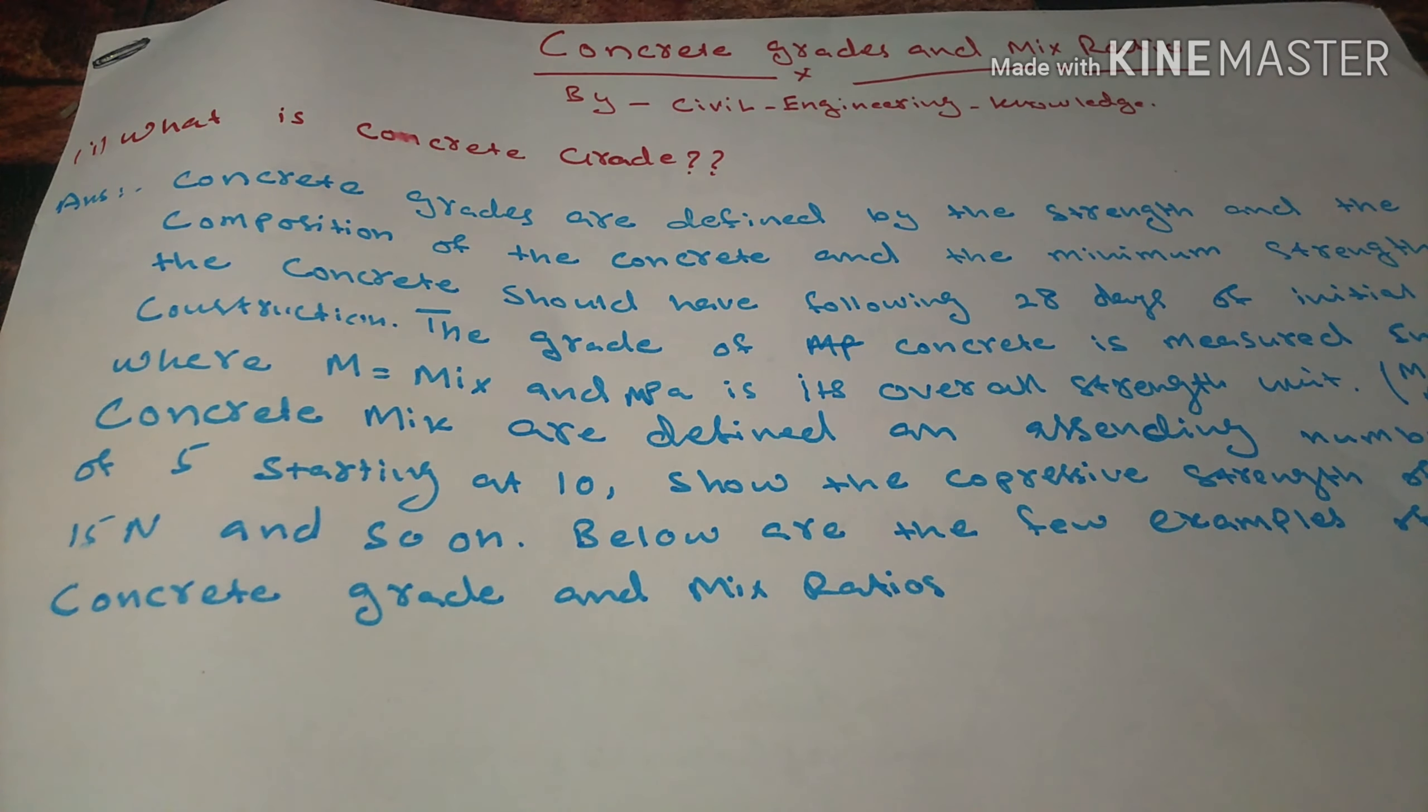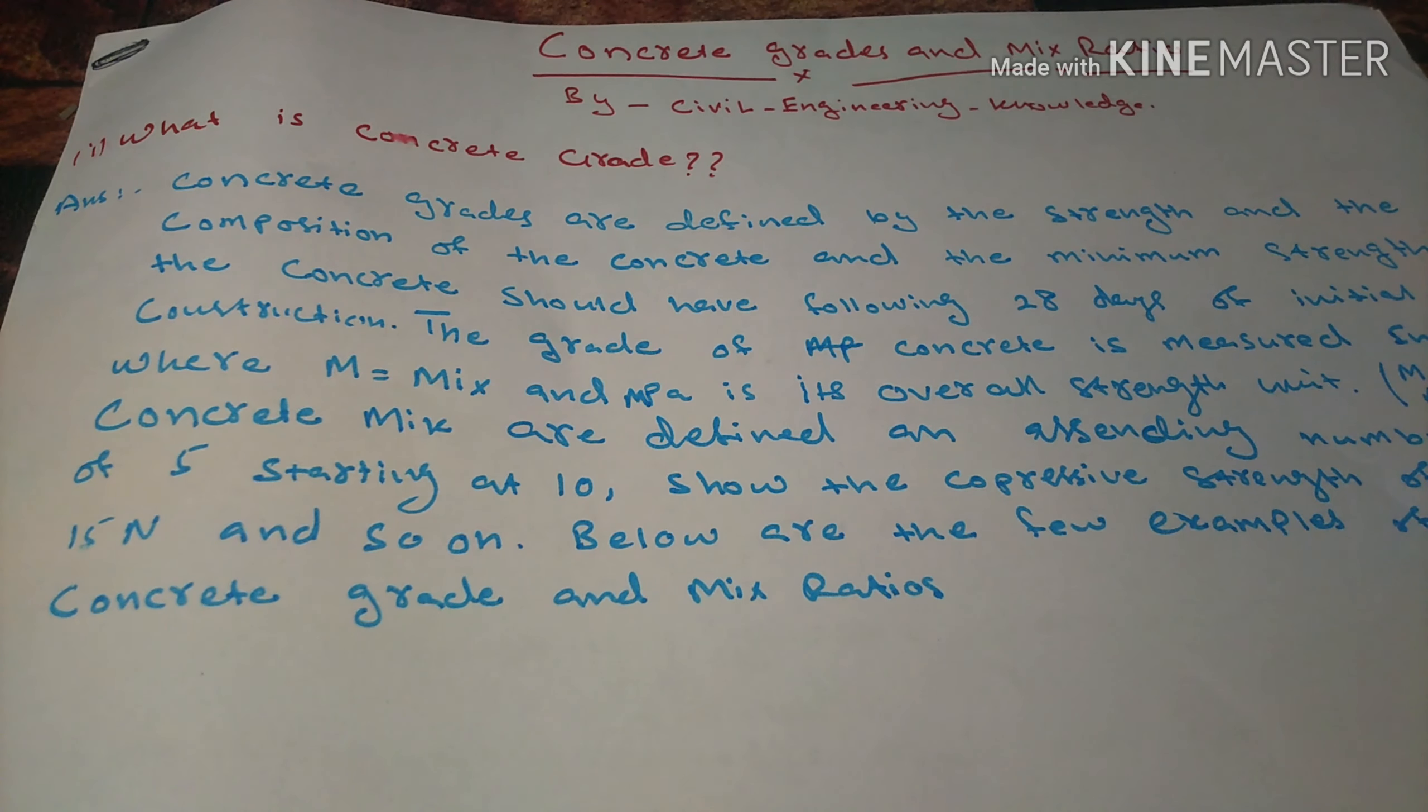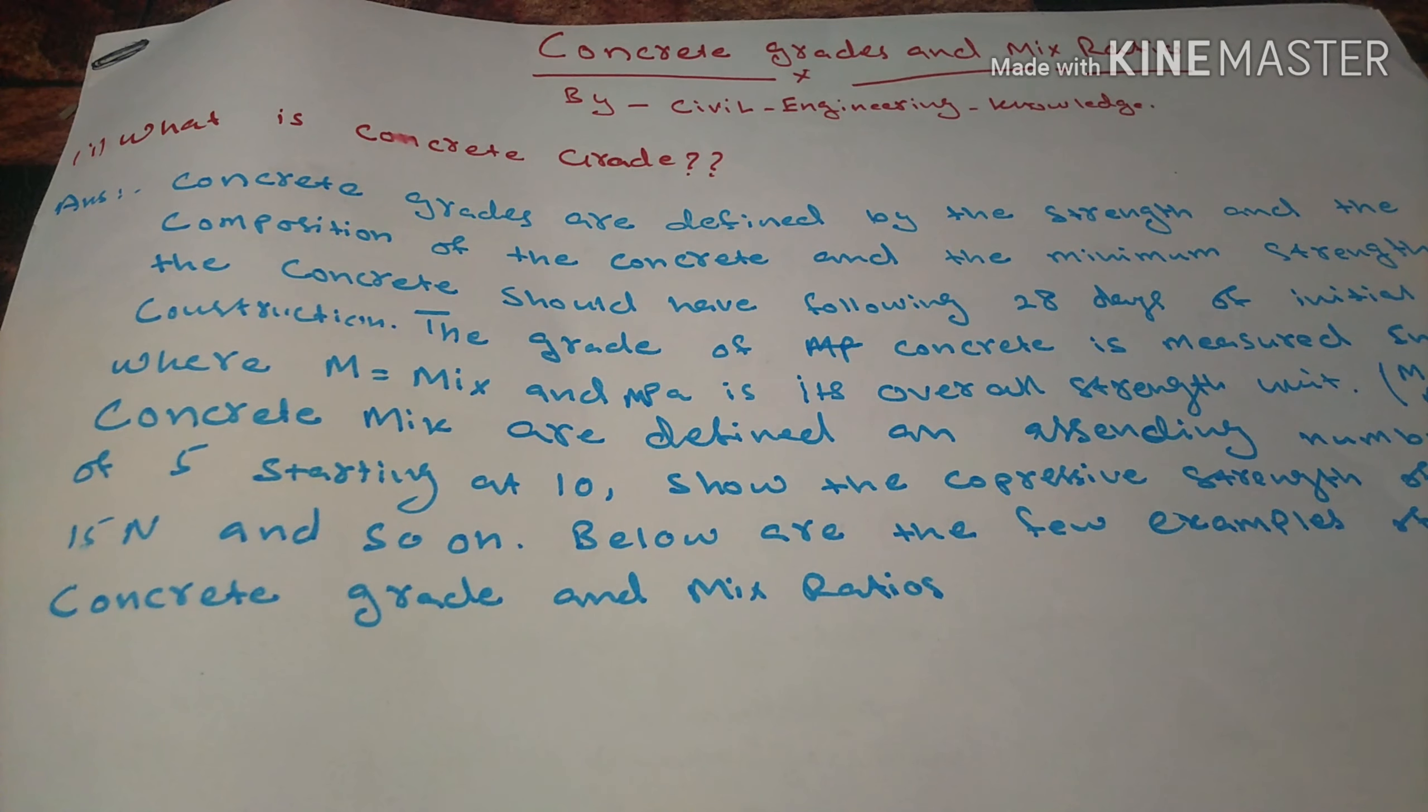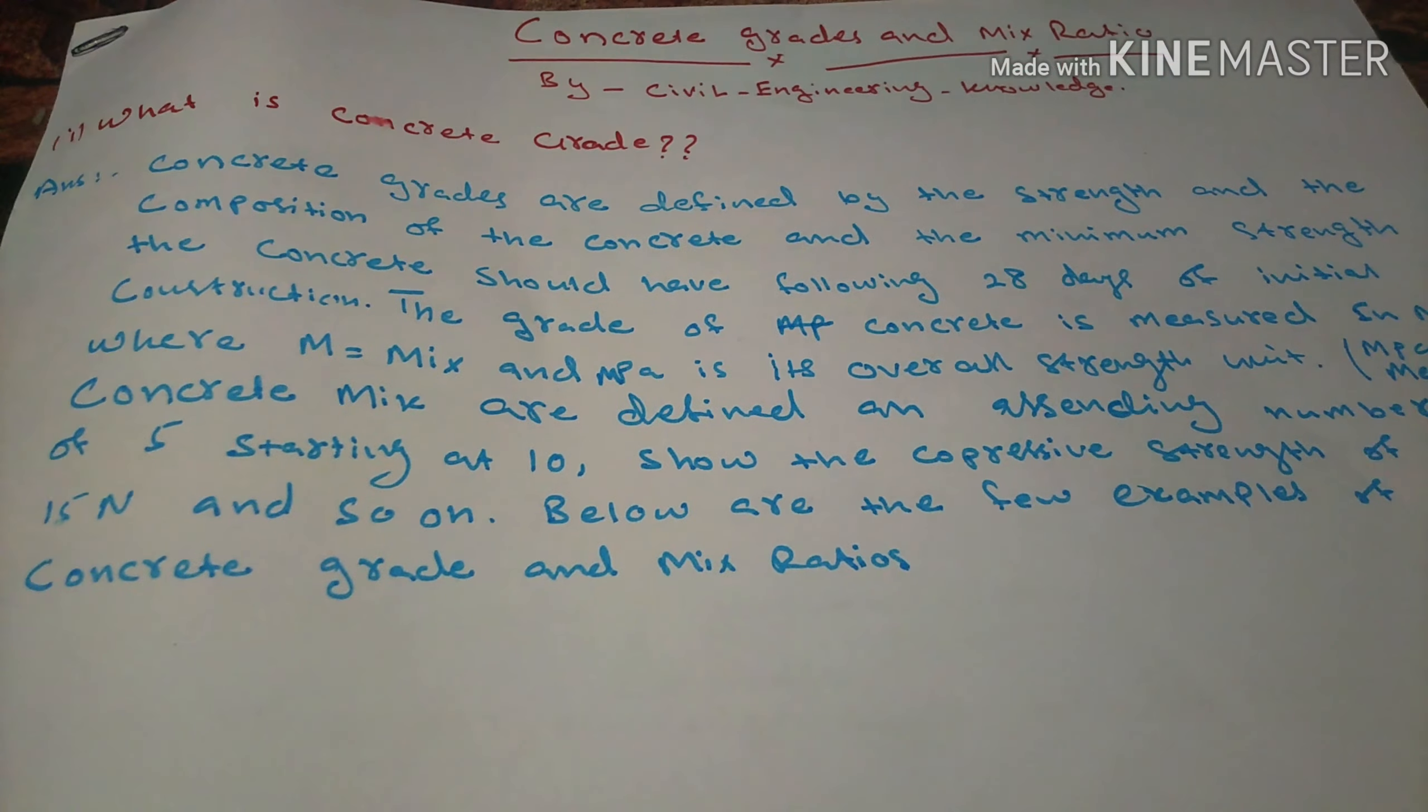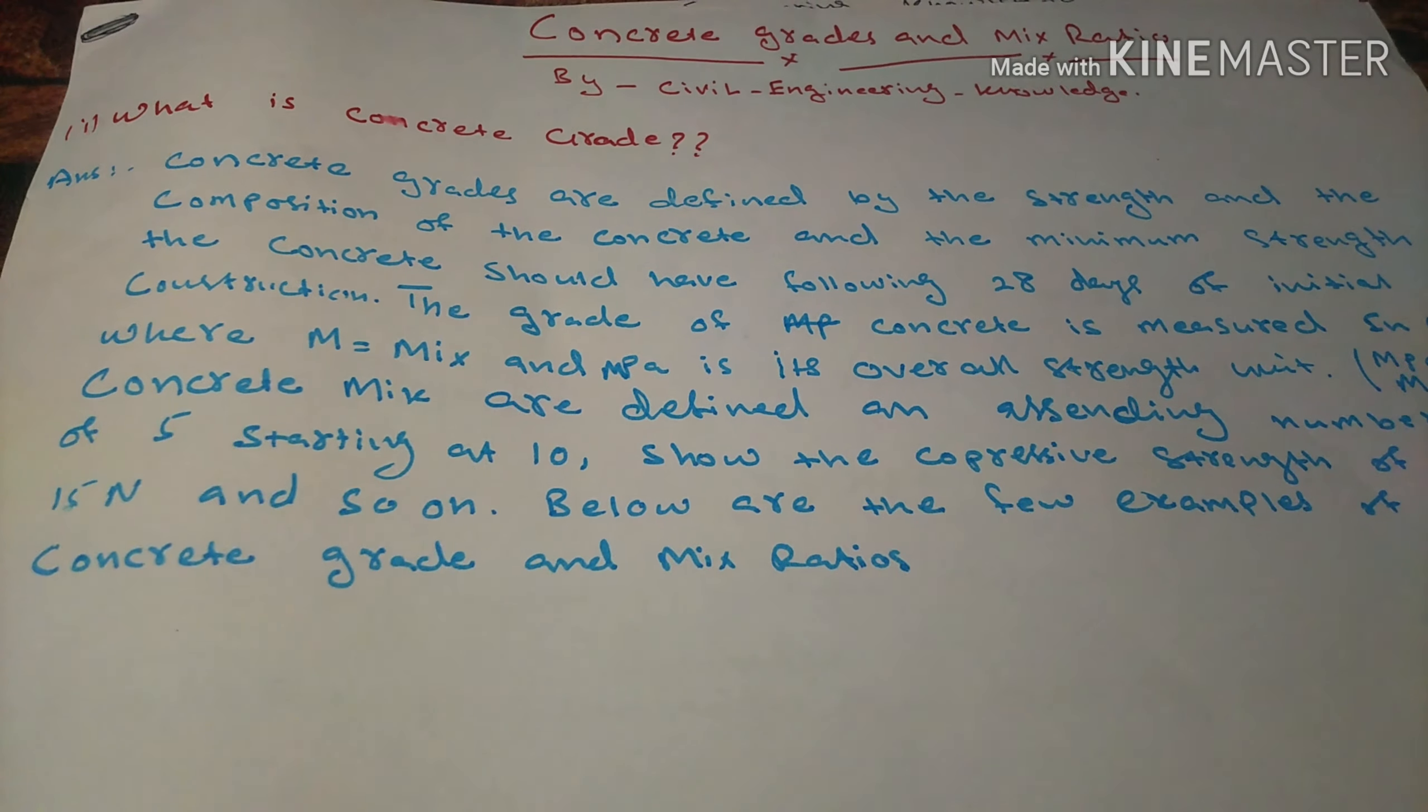The concrete should have following at 28 days of initial construction. The grade of concrete is denoted where M is mix and MPa is megapascal, its overall strength unit. Concrete is defined by the mix and MPa, the total strength unit after 28 days.